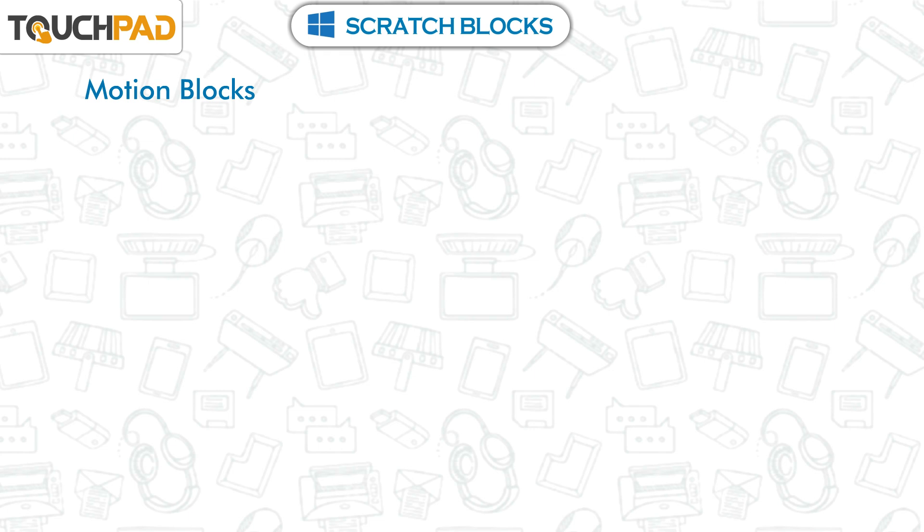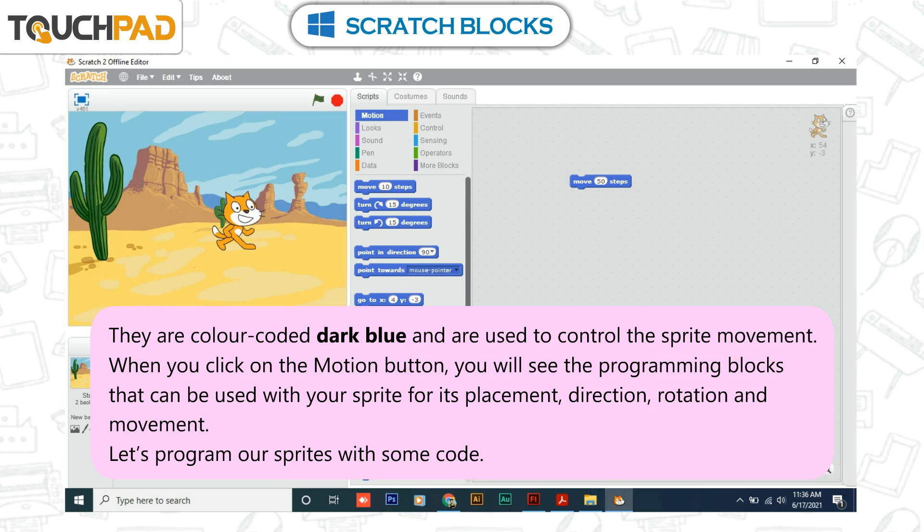Motion Blocks are color-coded dark blue and are used to control the sprite's movement. When you click on the motion button, you will see the programming blocks that can be used with your sprite for its placement, direction, rotation, and movement.